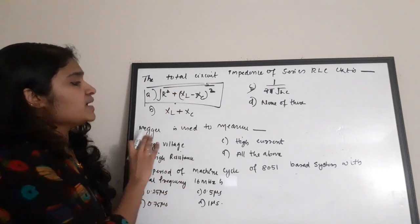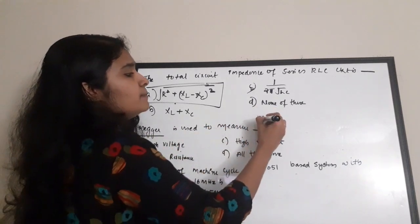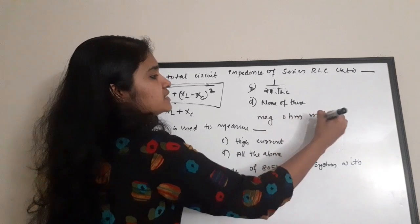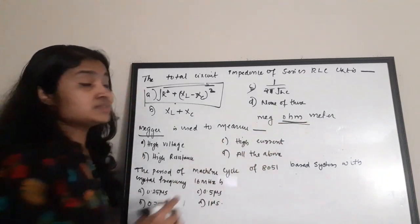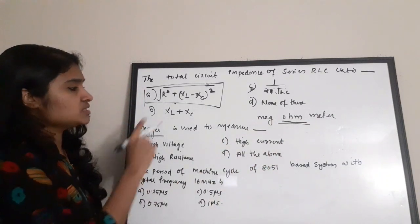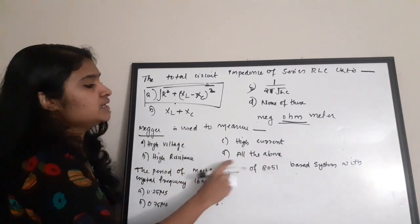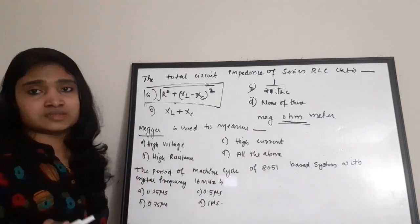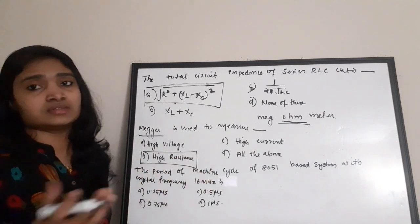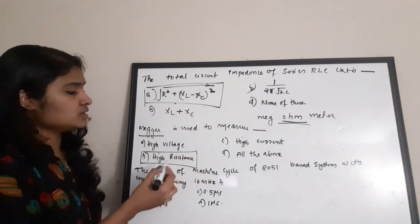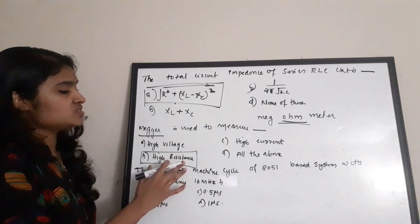Megger is used to measure — before answering, know that megger is a megaohm meter. From this term itself it is clear that a megaohm meter is used for measuring resistance. Options: A — high voltage, B — high resistance, C — high current, D — all of these. It is used for measuring high resistance, specifically the resistance of insulators, which have very high resistance. Correct answer is option B — high resistance.